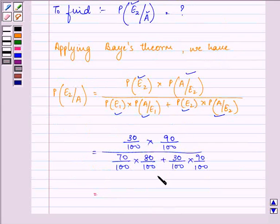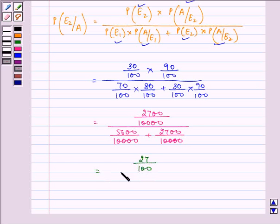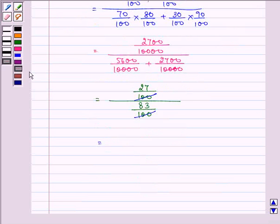we have it as 2700 upon 10,000 upon 5600 upon 10,000 plus 2700 upon 10,000. Further, we have 2700 upon 8300. Simplifying it, we have the answer to the given question as 27 upon 83.